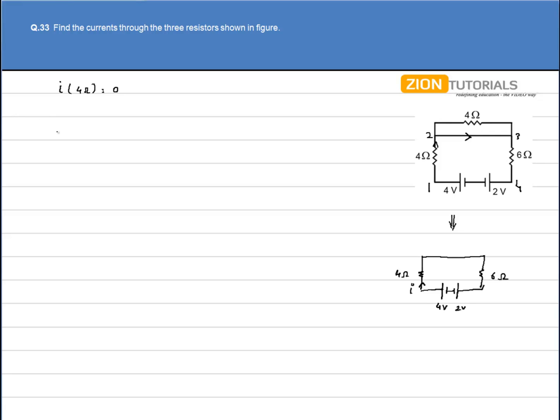On applying Kirchhoff's law we say 4 minus 2 is equal to i into net resistance that is 4 plus 6. So we have 2 is equal to i into 10. So current comes out to be 0.2 ampere.